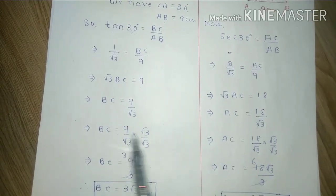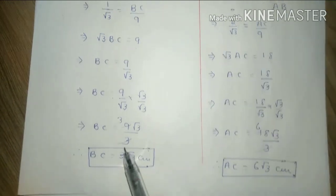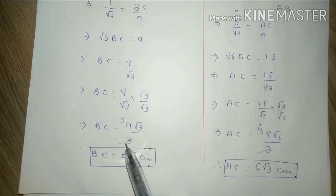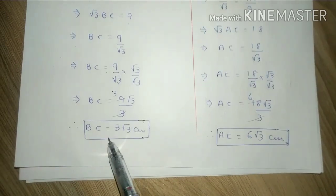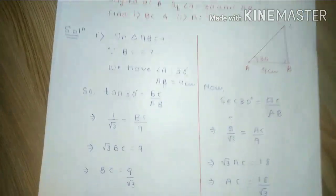Under root 3 and under root 3, now this will be 3. So 3 into 9, and BC is equal to finally 3 under root 3 centimeter.